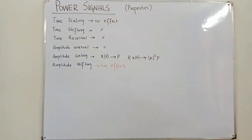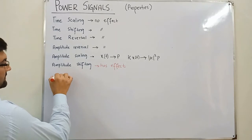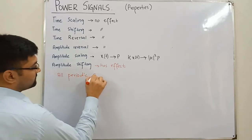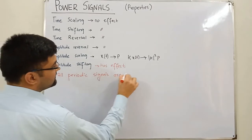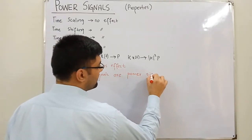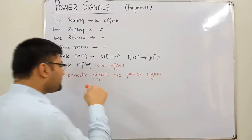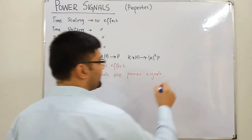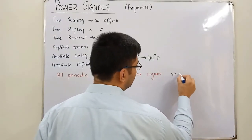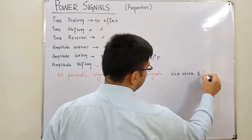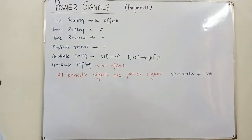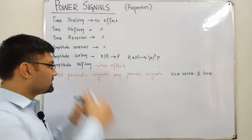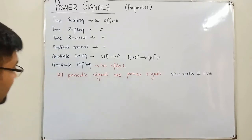Another important property is that all periodic signals are power signals. So if you have a periodic signal, it is going to be a power signal. However, the converse is not true — if you have a power signal, it is not necessary that it is periodic. But if you have a periodic signal, it must be a power signal.